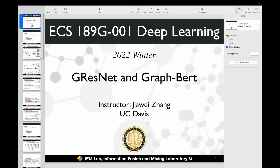Hello everyone, welcome back. Today we plan to conclude the last part about graph neural nets. Today's lecture is also the last part for the deep learning course. We will talk about the last models we plan to introduce: the GResNet and GraphBERT. They are both graph neural nets, but we try to incorporate more advanced techniques. The first incorporates residual learning into the model architecture, and the second relies on BERT models as an encoder for learning representations of graph data.